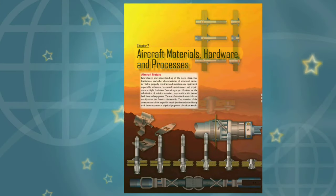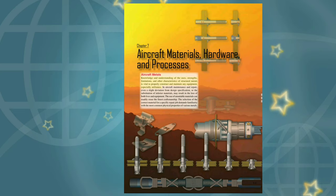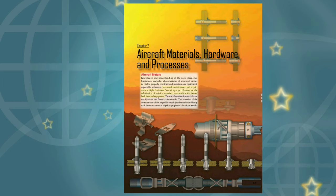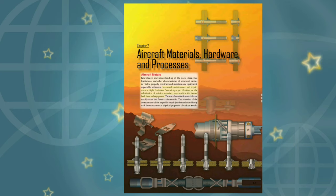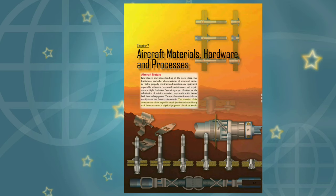Chapter 7: Aircraft Materials, Hardware, and Processes. Knowledge and understanding of the uses, strengths, limitations, and other characteristics of structural metals is vital to properly construct and maintain any equipment, especially airframes. In aircraft maintenance and repair, even a slight deviation from design specification or the substitution of inferior materials may result in the loss of both lives and equipment. The use of unsuitable materials can readily erase the finest craftsmanship. The selection of the correct material for a specific repair job demands familiarity with the most common physical properties of various metals.